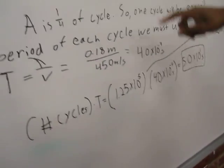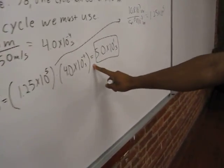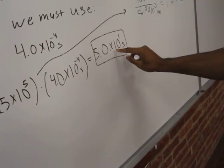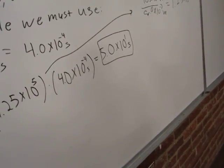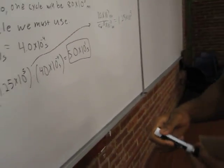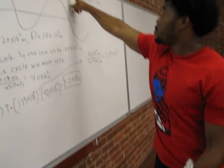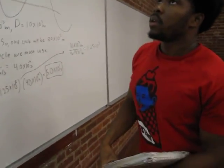That's the number of cycles that it takes to get through one kilometer. Multiply that by the time it takes to get through one cycle, and that equals 5.0 times 10 to the one seconds in order for us to get through this distance of one kilometer. Good.